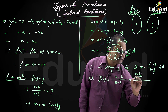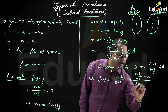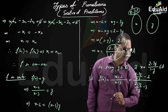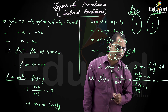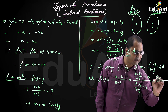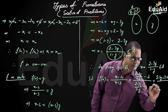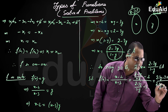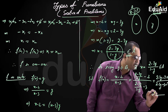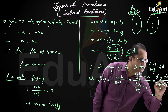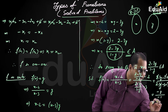Substituting x equals (2 minus 3y)/(1 minus y): the numerator becomes (2 minus 3y)/(1 minus y) minus 2, and the denominator becomes (2 minus 3y)/(1 minus y) minus 3. Taking LCM of (1 minus y) and simplifying: numerator gives 2 minus 3y minus 2(1 minus y) equals minus y; denominator gives 2 minus 3y minus 3(1 minus y) equals minus 1. So we get minus y divided by minus 1, which equals y.